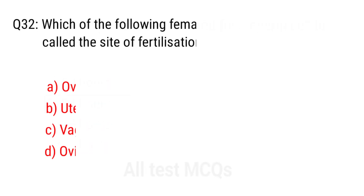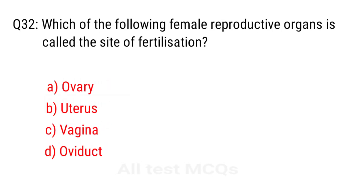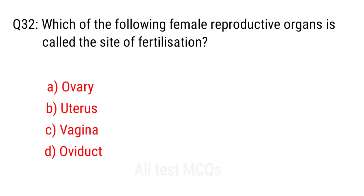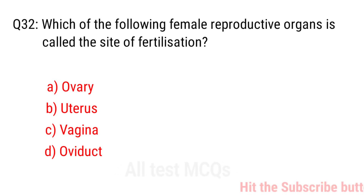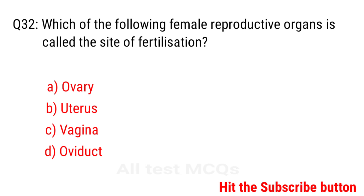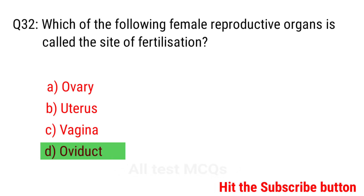Q32. Which of the following female reproductive organs is called the site of fertilization? The right answer is option D: Oviduct.